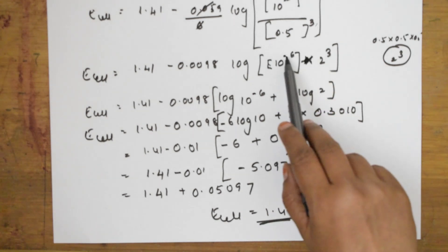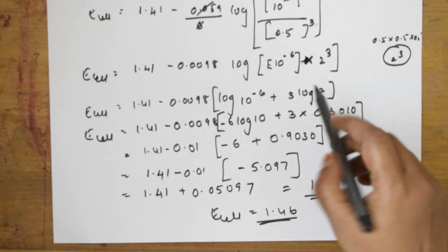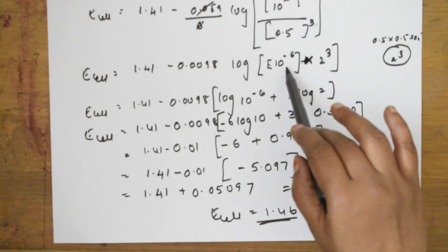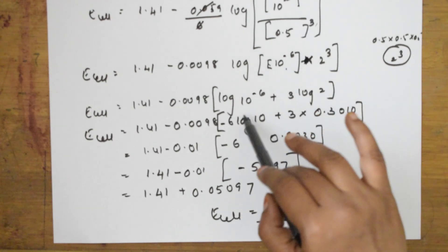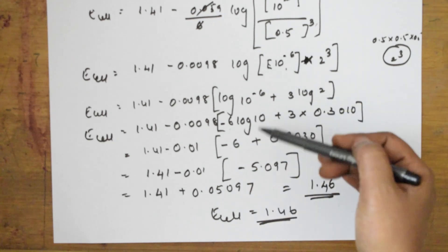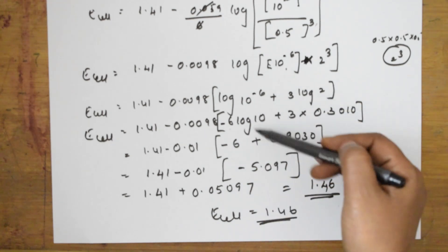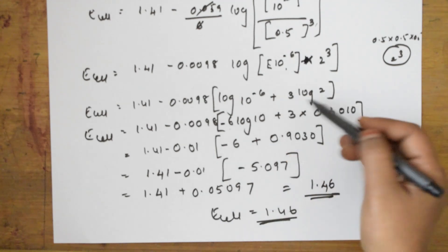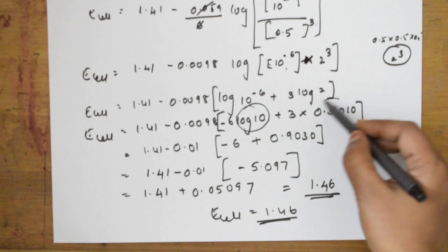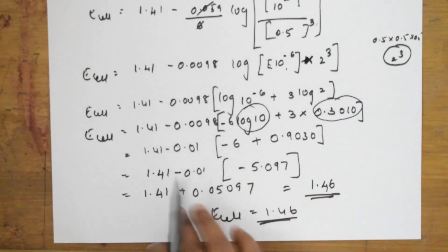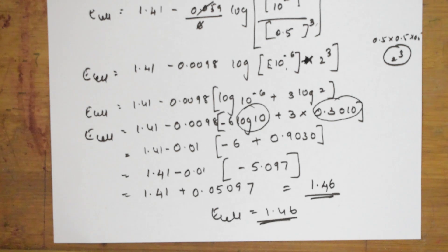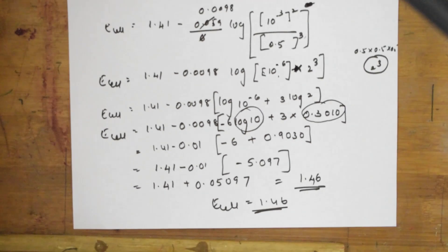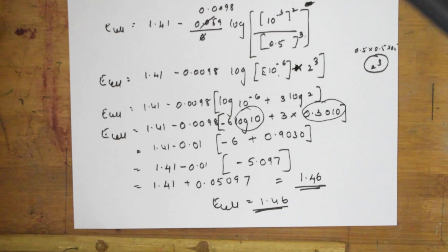So students, this is the application of the log trick to the Nernst equation. Whatever concentrations are given, you write them in the oxidized and reduced form, convert to powers of 10 and log 2 values that we memorized yesterday, and solve easily. I'll be solving many more such tricks. Thank you for watching, students.